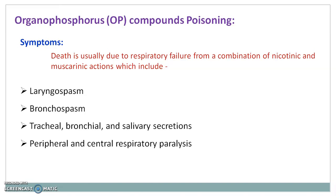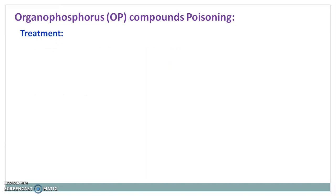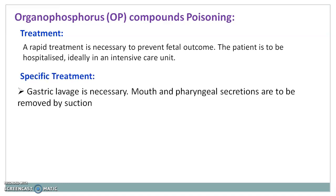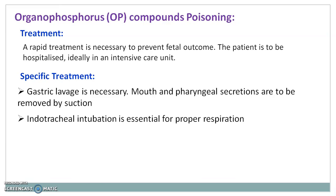A rapid treatment is necessary to prevent a fatal outcome. The patient is to be hospitalized, ideally in an intensive care unit (ICU). Specific treatment includes gastric lavage, which is necessary to remove the unabsorbed poison. Mouth and pharyngeal secretions are to be removed by suction. Endotracheal intubation is essential for proper respiration.